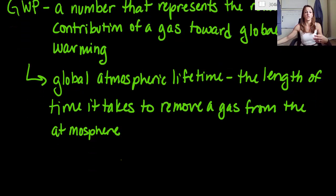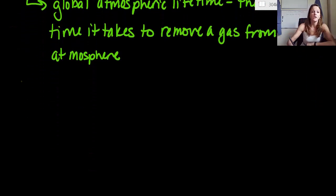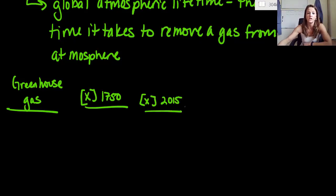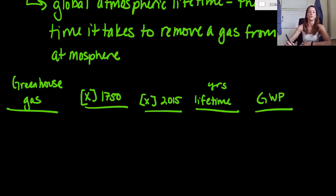So what we need to do is come up with a chart here to plot all of this out. The first thing in our chart is going to be the greenhouse gas. The second thing is going to be the concentration of the molecule at the year 1750. We're also going to look at the concentration of the molecule now in the year 2015. We're going to look at the lifetime of this molecule in years, and then we're going to determine the GWP, the global warming potential.